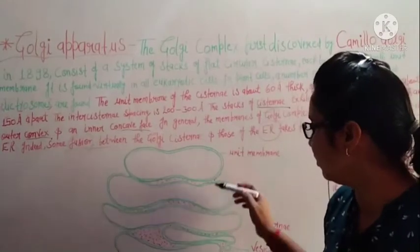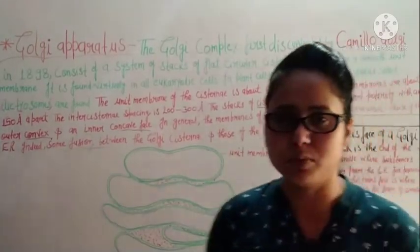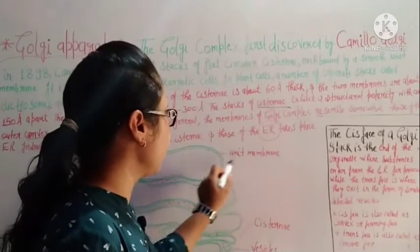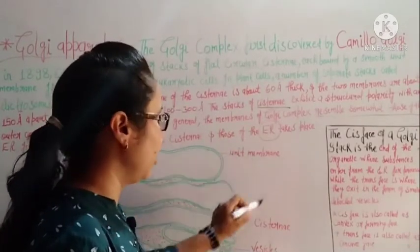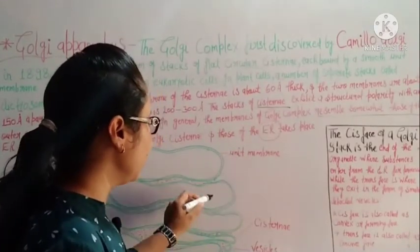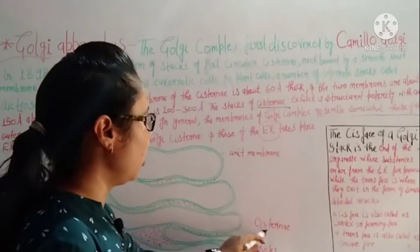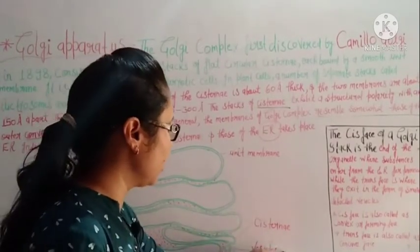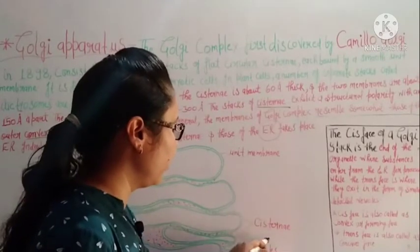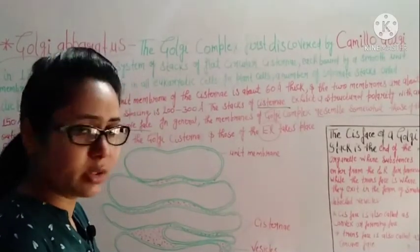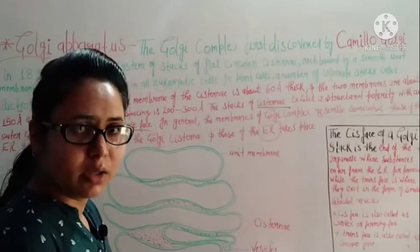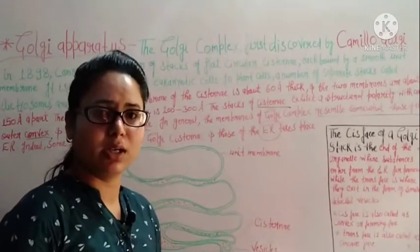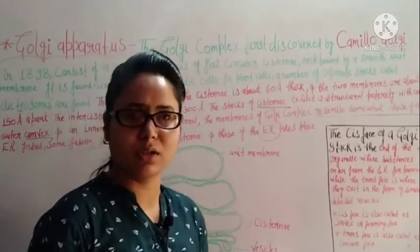Looking at the structure of the Golgi body, you will see the unit membrane and the plate-like structures called cisternae. You will also see vesicles. When a vesicle matures, it detaches from the cisterna — it breaks off and the process is complete.